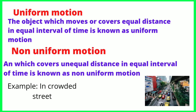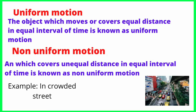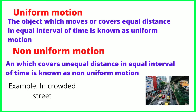Uniform motion means the object which moves or covers equal distance in equal intervals of time is known as uniform motion.